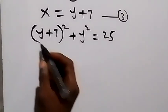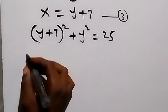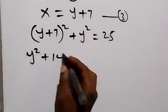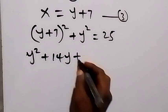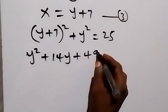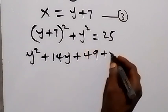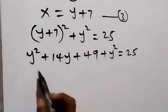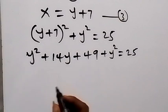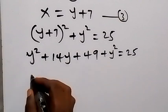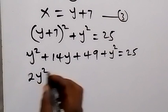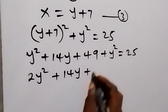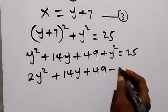we can expand this and this will give us y squared plus 2 times y times 7, that's plus 14y, then plus 7 squared is 49, then plus y squared equals 25. When we add y squared together, y squared plus y squared gives us 2y squared, then plus 14y plus 49, then bring 25 over, minus 25 equals zero.